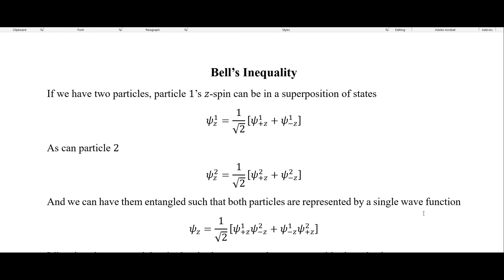In this video, I'm going to start discussing Bell's inequality, or sometimes called Bell's theorem, which is a proof that your quantum mechanical theory cannot have what are called local hidden variables, and so that's what I'll start getting into today.